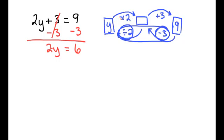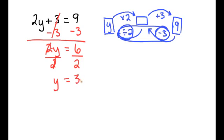The inverse of multiplying by two is dividing by two. So we will divide by two on the left, and by the property of equality, divide by two on the right. Our twos cancel out, leaving us with y equals six divided by two, which is three. We now have a claim that y is equal to three.